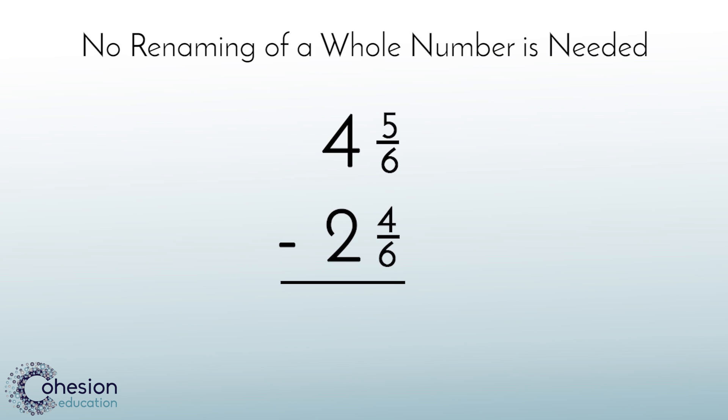Our first step is to subtract the fractions 5 sixths minus 4 sixths. This equals 1 sixth. Now we can subtract the whole numbers. 4 minus 2 equals 2. Through our subtraction, we have created the mixed number 2 and 1 sixth. So 4 and 5 sixths minus 2 and 4 sixths equals 2 and 1 sixth.